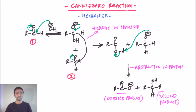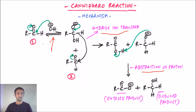The Cannizzaro reaction mechanism has three steps: first, attack of a nucleophile; second, hydride ion transfer; and third, abstraction of a proton. In the first step, the OH⁻ nucleophile — obtained from concentrated potassium hydroxide or sodium hydroxide — attacks the carbonyl carbon, which carries a partial positive charge. As a result, the pi bond breaks and the bonding electrons shift onto the oxygen, forming an anion with a negative charge on oxygen and a new hydroxyl group on carbon.